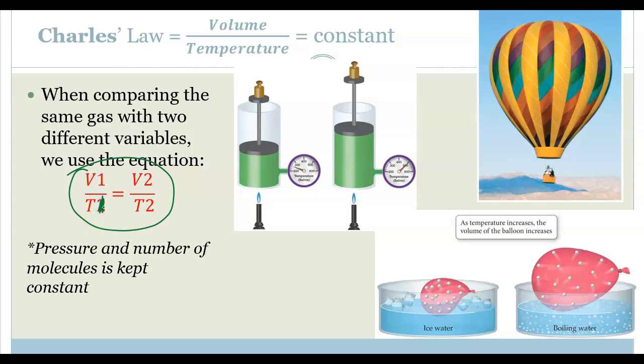This is what happens whenever if you have a balloon outside in the hot air and then you bring it into air conditioning and it gets smaller. This is because the temperature has decreased, so the volume also has to decrease because the molecules aren't moving quite as fast. This also explains how a hot air balloon works, because as you increase the temperature, the volume of the gas has to expand in order to keep that pressure constant.